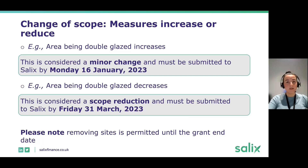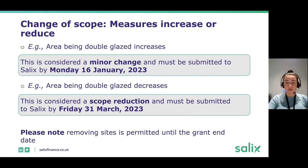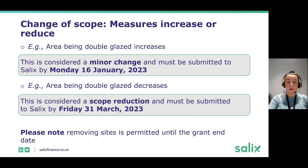If you decide to reduce the scope of a measure — for example, reducing the glazing measure — that's a scope reduction. The deadline for that is the grant end date of the 31st of March 2023. It follows the completions process in that you'll just need to provide an updated application form so we're aware of what measures went ahead. We won't need to authorise this change request; it's something you'd share with us upon completion.